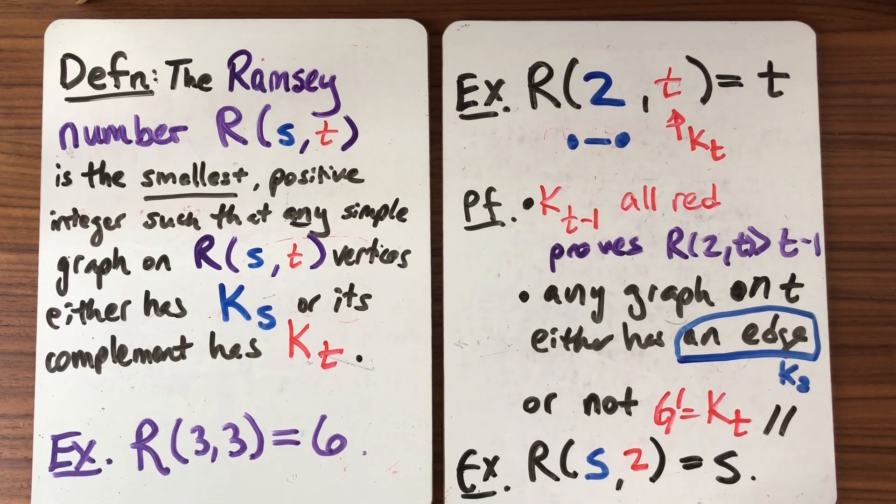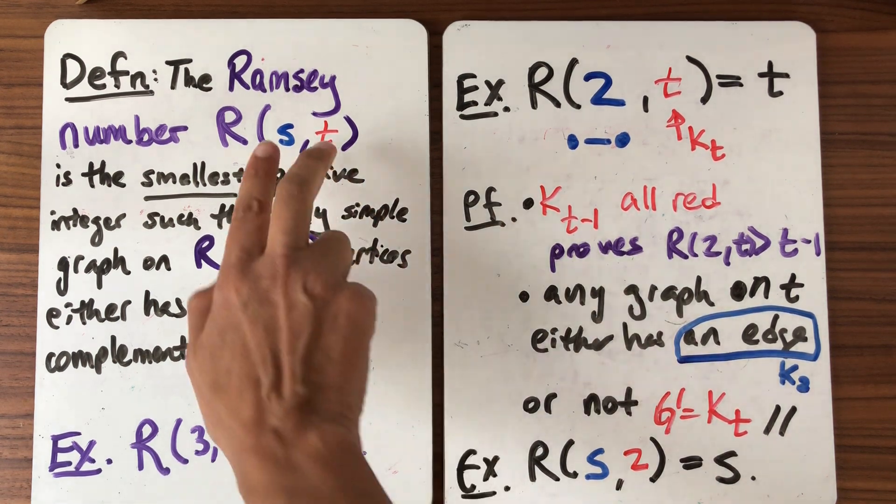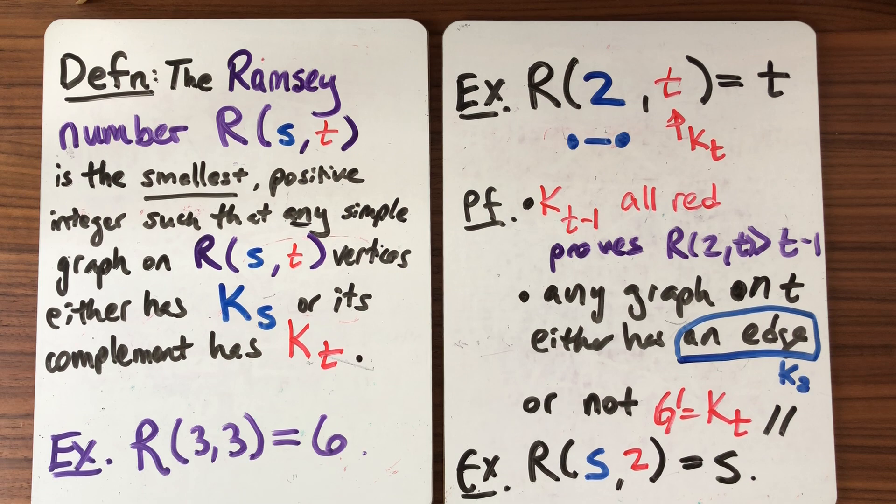Okay so Ramsey numbers have this symmetry if they exist but it's not actually obvious that Ramsey numbers exist for any values of s and t. So what we're going to do next time is we're going to prove that Ramsey numbers in fact do exist and we're going to do that by finding a bound on them. And what is the bound that we're going to find?